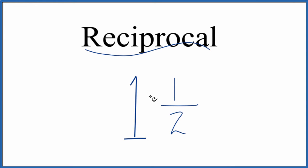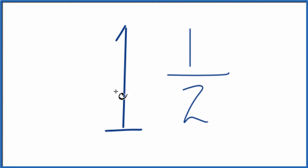So let's find the reciprocal here for 1 and 1 half, and here's how we can do that. When we have a mixed fraction like 1 and 1 half, it's helpful to get it to an improper fraction to take the reciprocal.